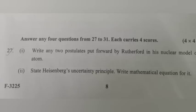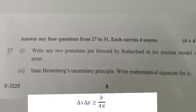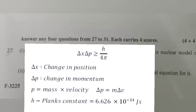Question: State Heisenberg's uncertainty principle and write the mathematical equation for it. Answer: Heisenberg's uncertainty principle states that it is impossible to determine simultaneously the exact position and exact momentum of a small moving particle like an electron. Equation: ΔX · ΔP ≥ h/4π, where ΔX is the change in position, ΔP is the change in momentum, and h is Planck's constant.